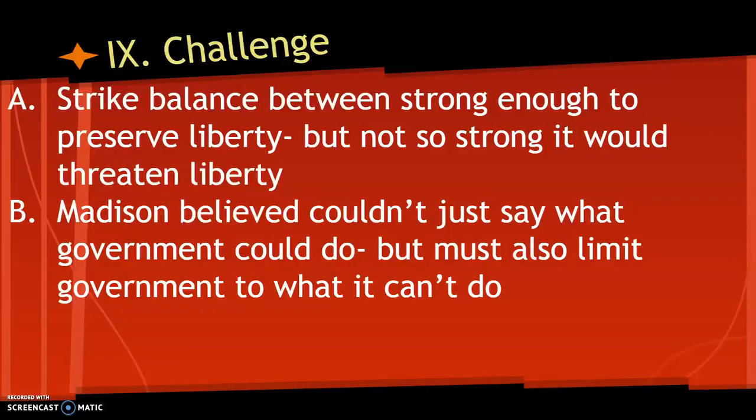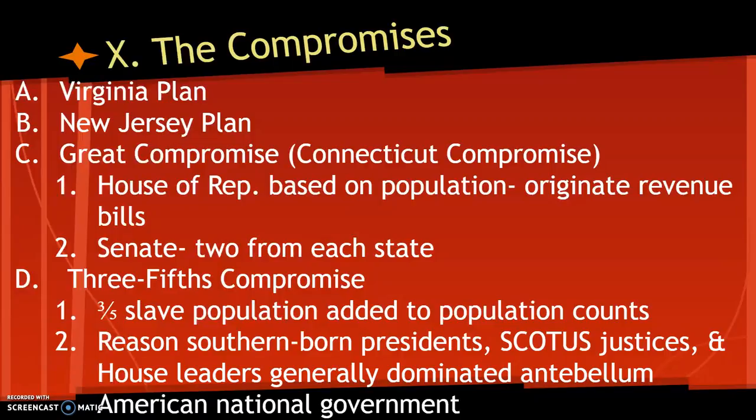From your history classes, you know about the compromises: the Virginia Plan and the New Jersey Plan. Within those two, we end up with the Great Compromise, or the Connecticut Compromise, in which the House of Representatives is based on population — it's closer to the people and is where revenue bills must originate. The Senate has two members from each state.